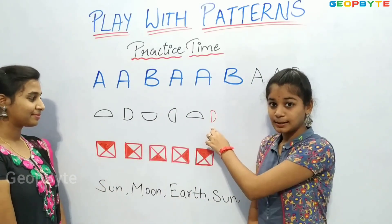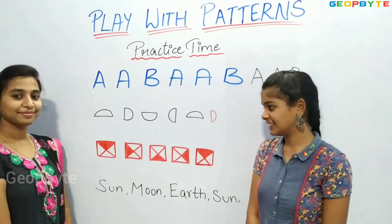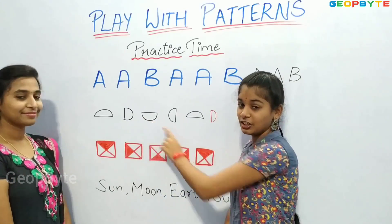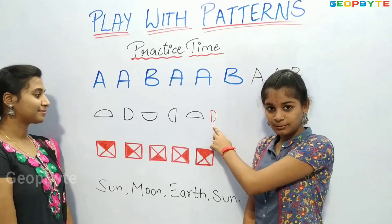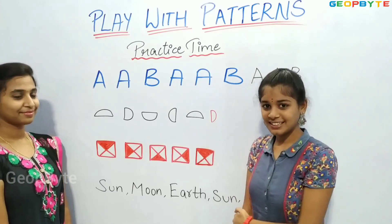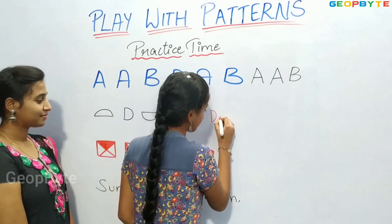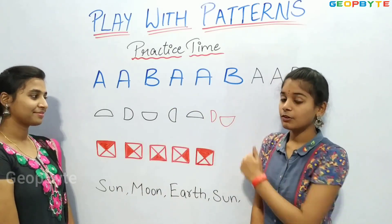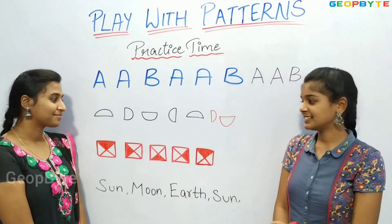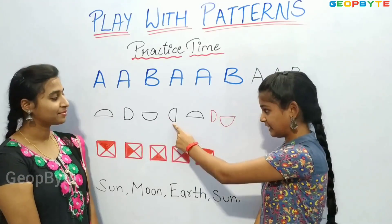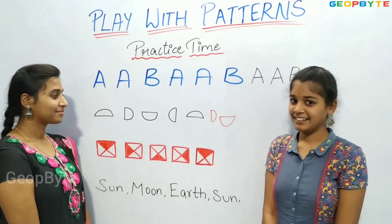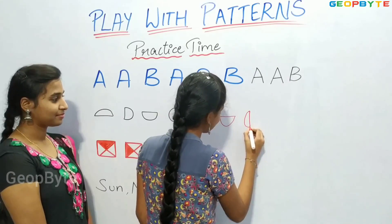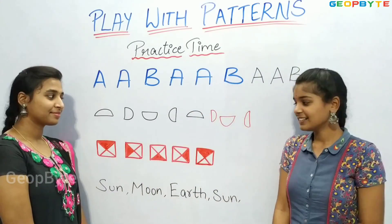So, after right side semicircle, what comes? Let us see. After right side semicircle, there is upside down semicircle. So after right side semicircle, there will be upside down semicircle. Let us draw. Now, after upside down semicircle, what comes? After upside down semicircle, there is left side semicircle. Let us draw. Now we have completed this pattern.